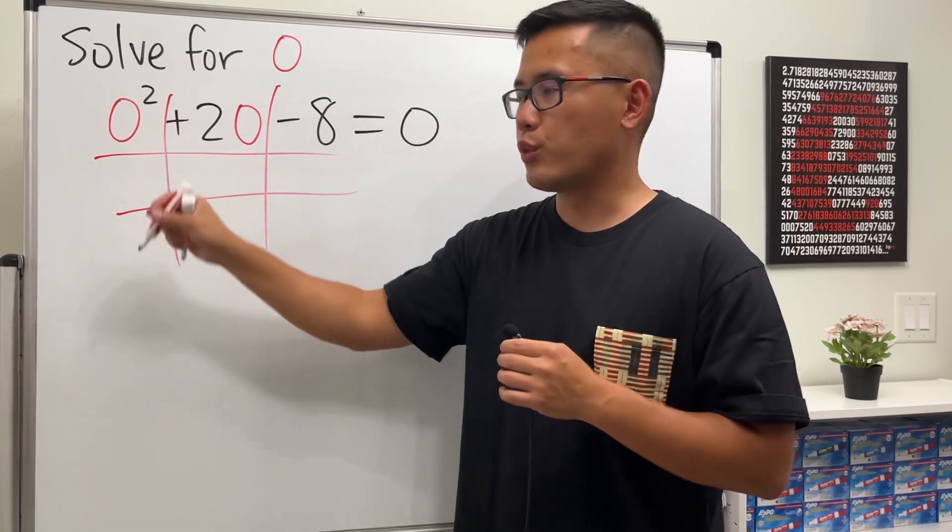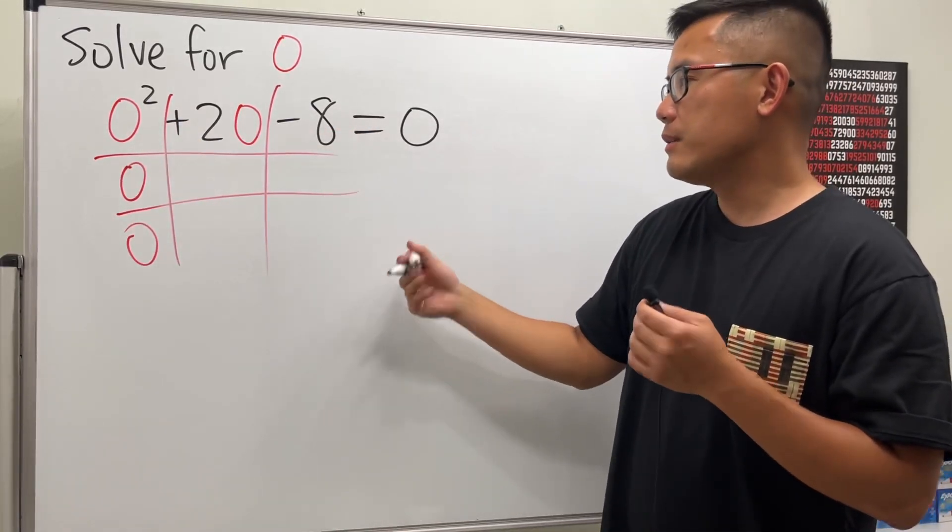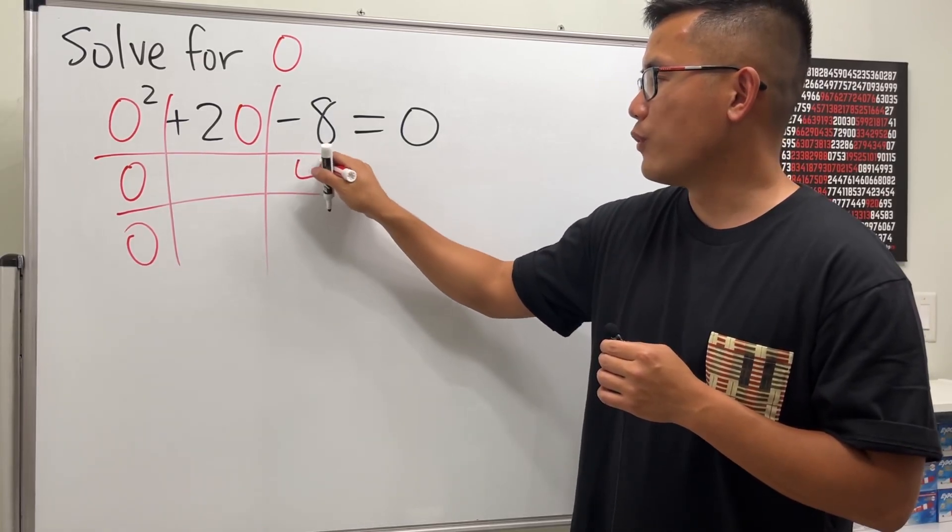What times O is equal to O squared? Well, the answer is O and O. And then what times what gives us negative 8? The combination that we are going to use is 4 and negative 2.